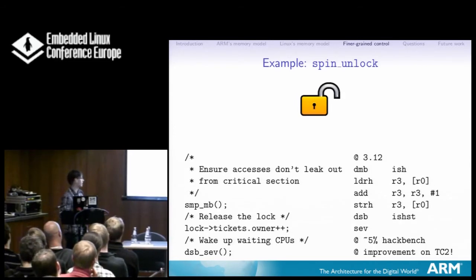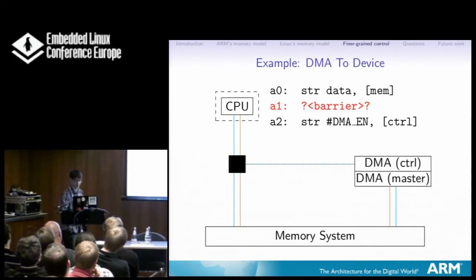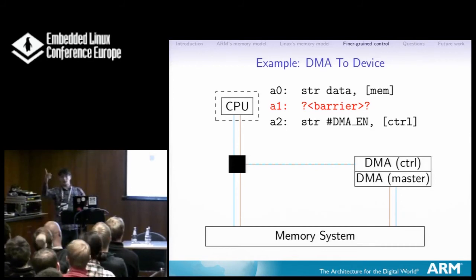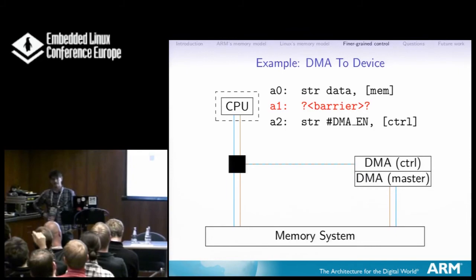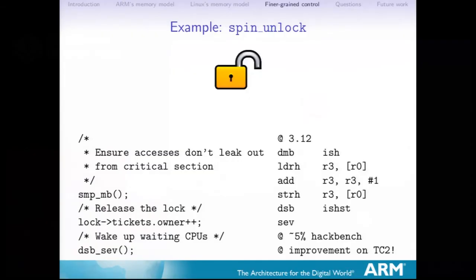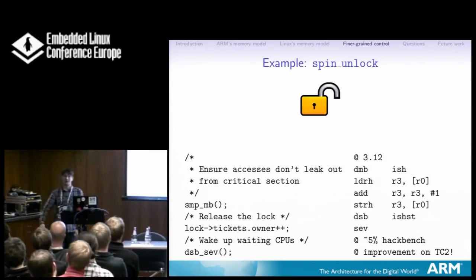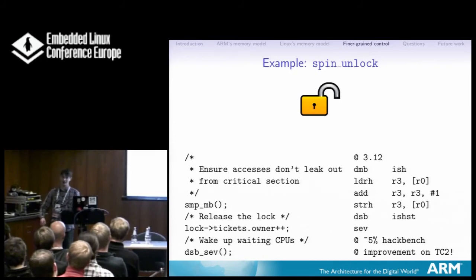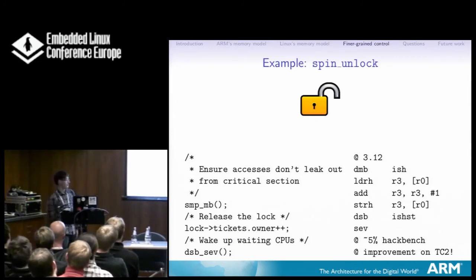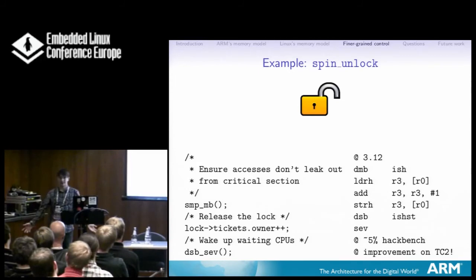Q: Why weren't they all ISH to begin with? Binutils didn't used to accept the options, so when someone did the original code, binutils wouldn't let them do it. They also implemented one option first — something like outer-shareable — and that wasn't useful. So it's just legacy, and partly lack of understanding — people didn't want to worry about this. It was bad enough having to add the barriers in the first place.